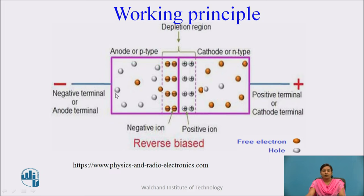As these minority charge carriers flow towards the junction, hole-electron recombination takes place and generates a depletion region. Once the depletion region is generated, the current flowing through the device is restricted.